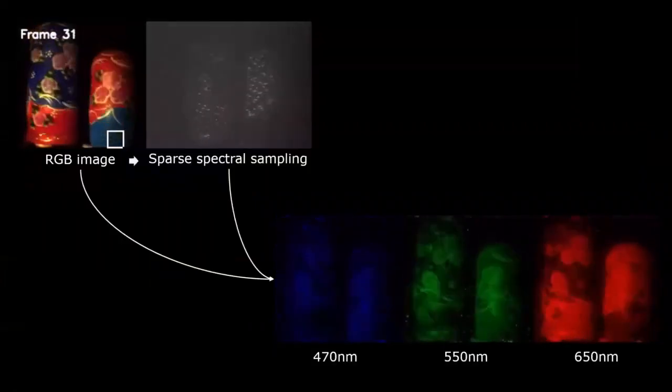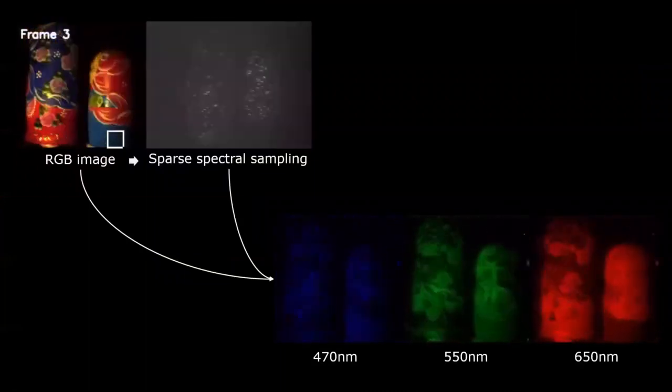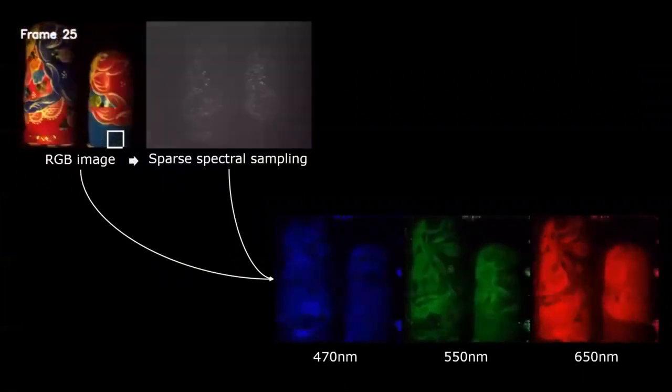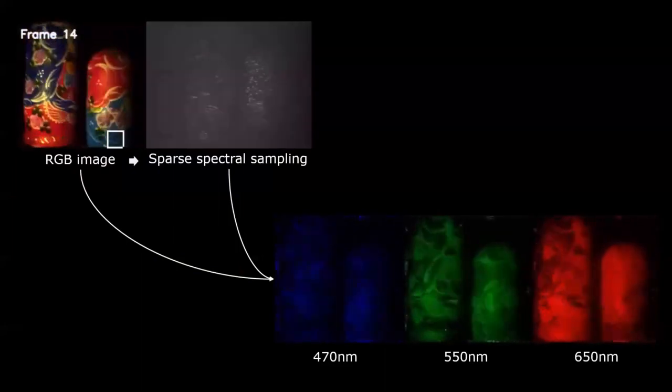We present SASE, a super pixelated adaptive spatial spectral imager that can capture hyperspectral images at high spatial and spectral resolution at video rates. Our setup can image at more than half a megapixel spatial resolution, a spectral resolution of 10 nanometers or better, and at 18 frames per second.